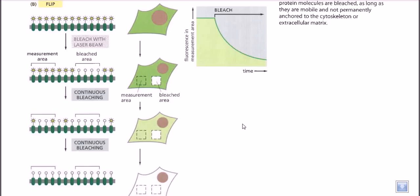Let us talk about an experiment called FLIP, or Fluorescent Loss in Photobleaching. This experiment has been done to prove the motility of phospholipid molecules in the cell membrane. This was suggested by Singer and Nicholson, according to their fluid mosaic model.